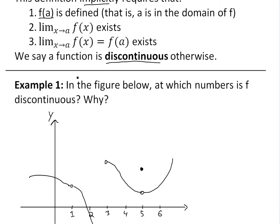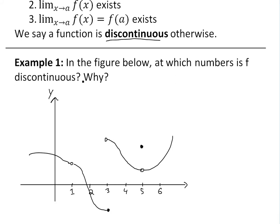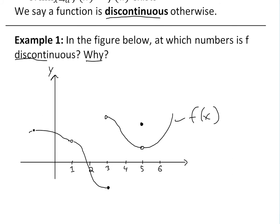Now let's look at the first example on continuity. Given the figure below, at which numbers is the function f continuous, and why is it discontinuous at others?